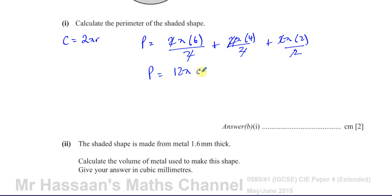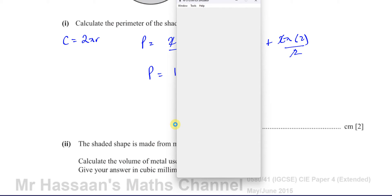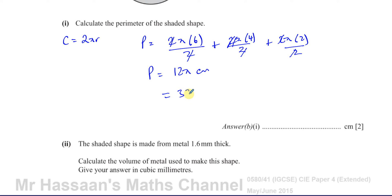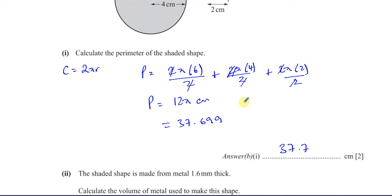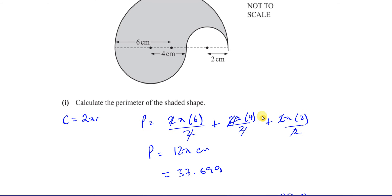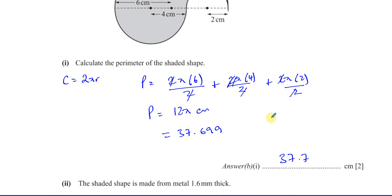So the perimeter is 12π centimetres. To 3 significant figures, you enter 12π on the calculator and get 37.699, so that's 37.7 centimetres. And that's the answer to Part B1, where you have to find the perimeter of the shape.